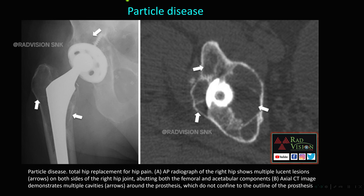Post hip replacement, lucent areas in the acetabular and femoral aspects with multiple cystic cavities adjacent to the prosthesis can also sometimes mimic tumors — this is nothing but particle disease.